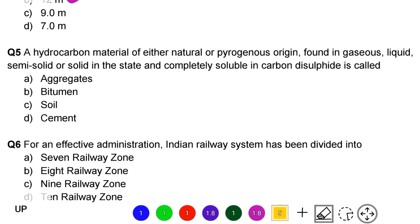Next question: a hydrocarbon material of either natural or pyrogenous origin found in gaseous, liquid, semi-solid or solid in the state and completely soluble in carbon disulfide is called. Option A: aggregates. Option B: bitumen. Option C: soil. Option D: cement. The correct answer is option B, bitumen.